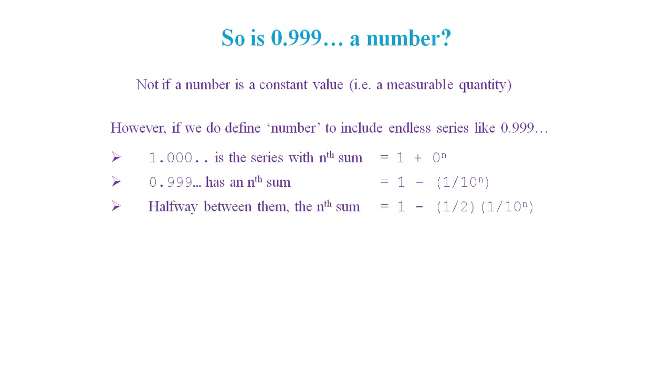And halfway between 1 and 0.9 recurring we have this series. So if an endless series is a number, we can easily find numbers between 0.9 recurring and 1.